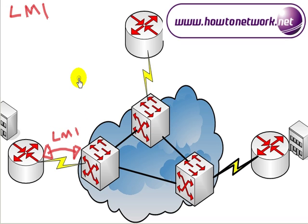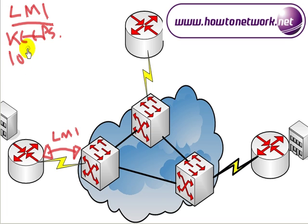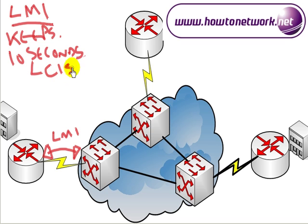The LMI is used by the switch to learn which DALCs are defined and what their status is. A key feature is the keep-alive: every 10 seconds an LMI message is sent from the frame relay switch to your router, verifying that the PVC is active and that data has been exchanged. We'll look at an LMI debug when we log on to a live router. There are three types of LMI. The first and most important is Cisco, which is the default LMI type — when you first boot up your frame relay connection, the first type tried is Cisco.